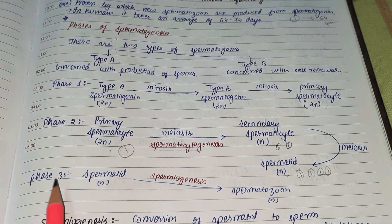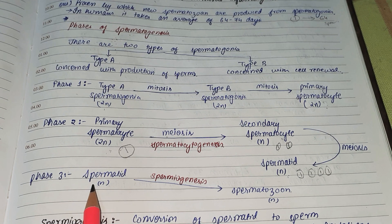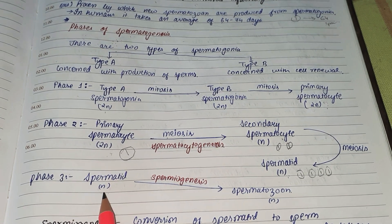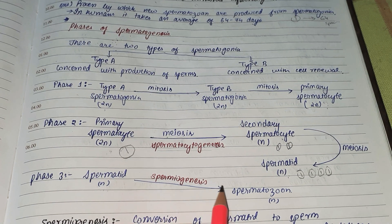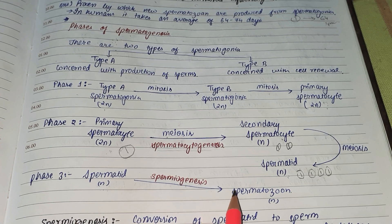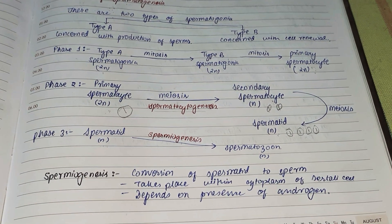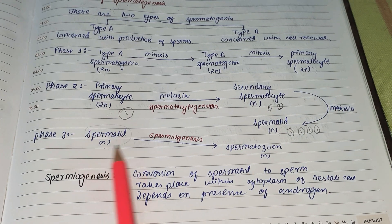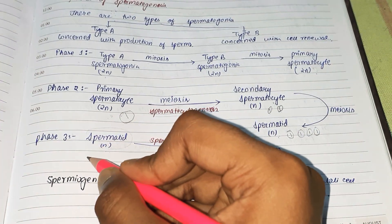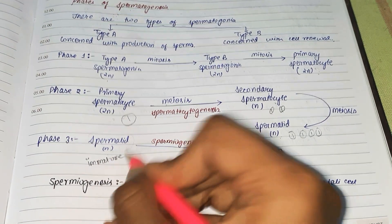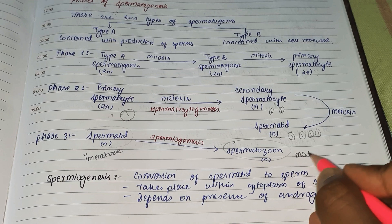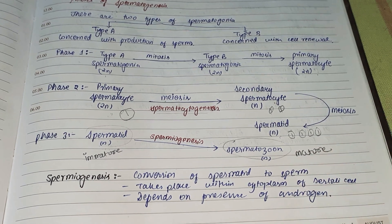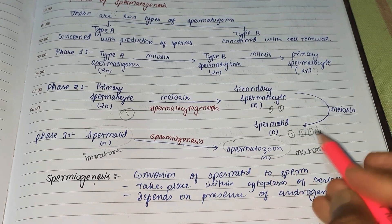Phase three: the spermatids, which are haploid, undergo spermiogenesis and get converted into spermatozoa. Spermiogenesis is the conversion of spermatids to mature sperms. The spermatid is the immature form, and the spermatozoon is the mature form.